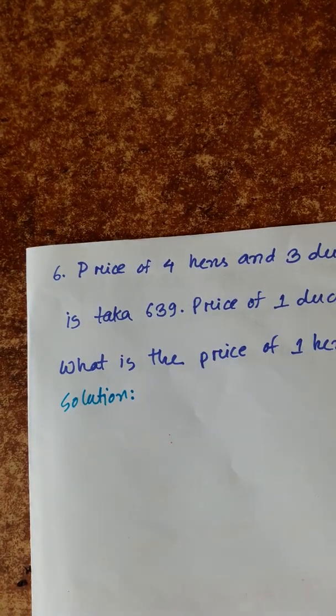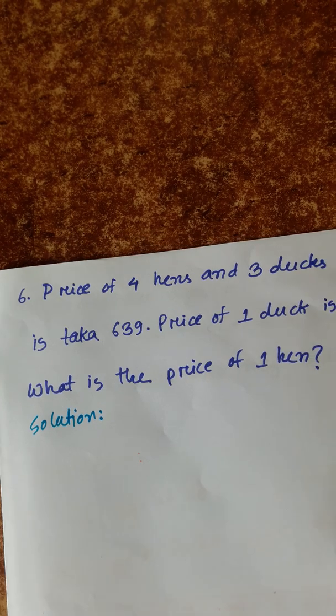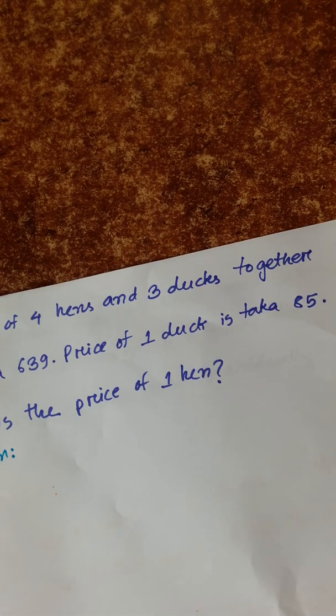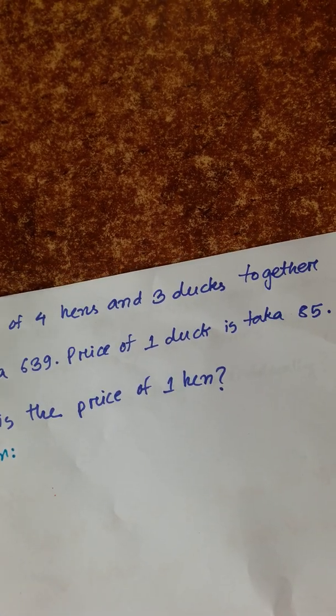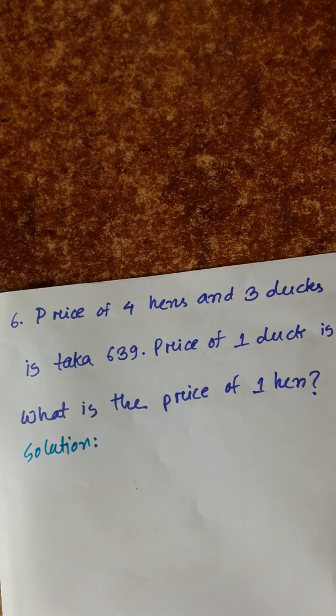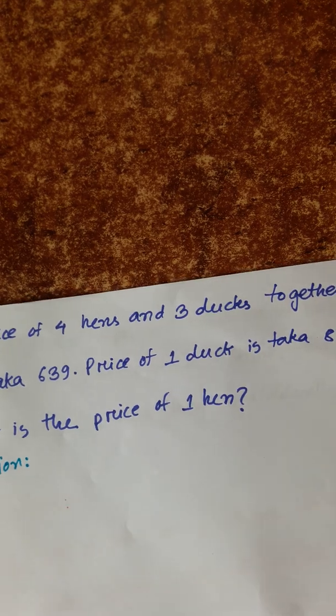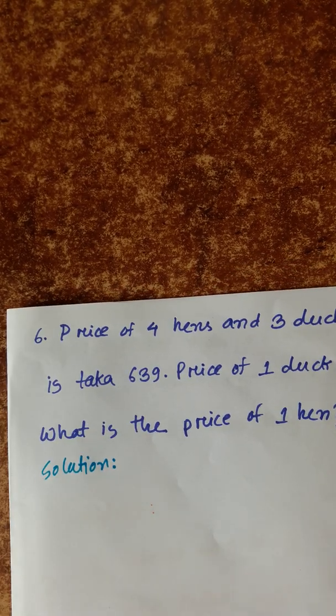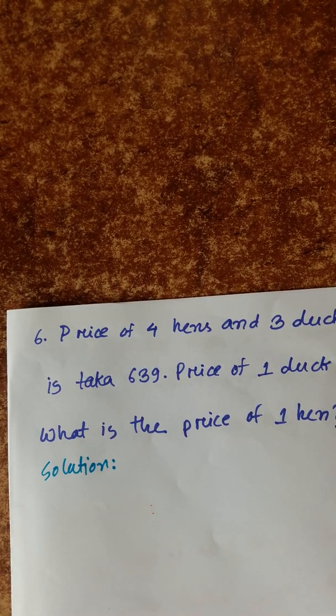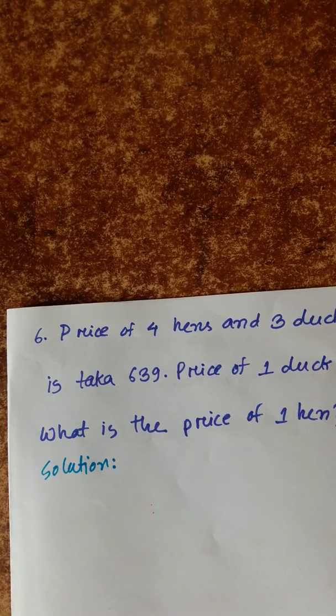Last problem: Price of 4 hens and 3 ducks together is Taka 639. Price of 1 duck is Taka 85. What is the price of 1 hen?